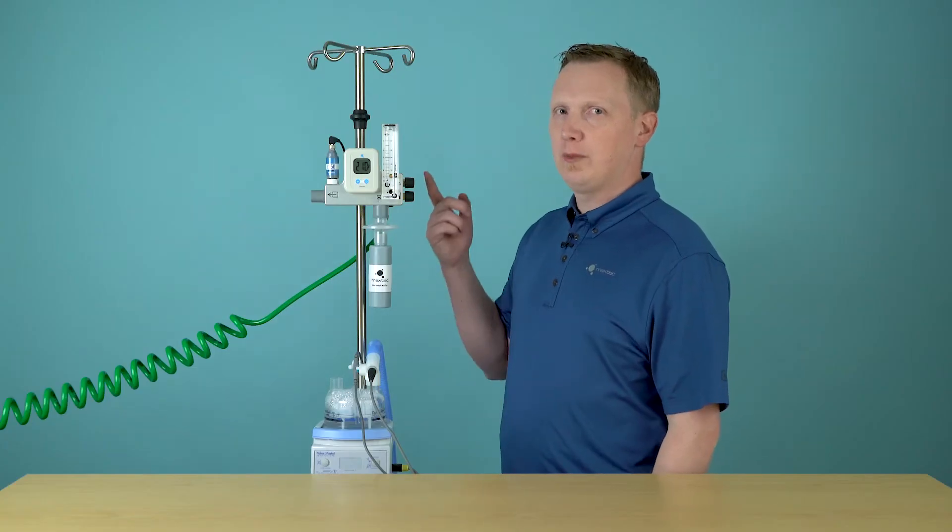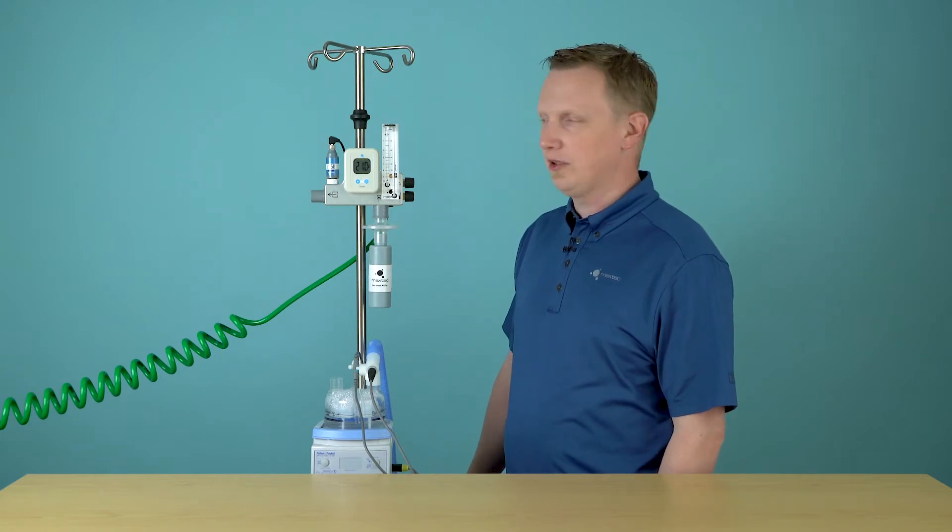The second way you can perform an oxygen sensor calibration on the Max Venturi is using 100% oxygen, such as an in-wall oxygen source or an oxygen tank that is 100% oxygen.